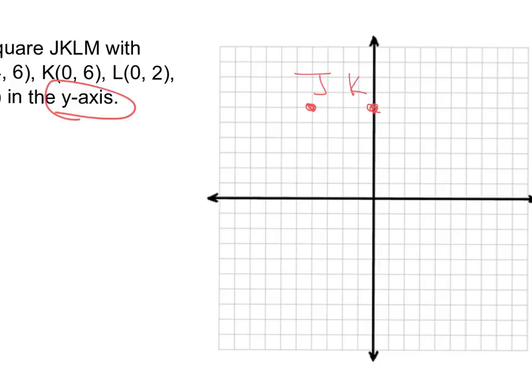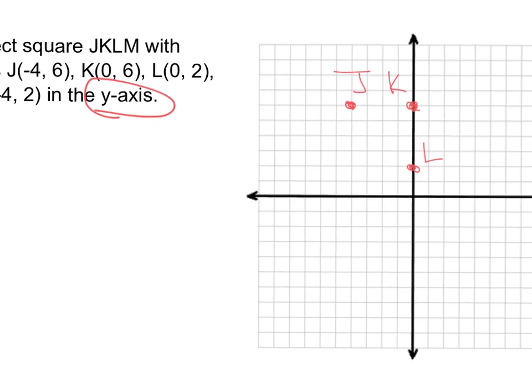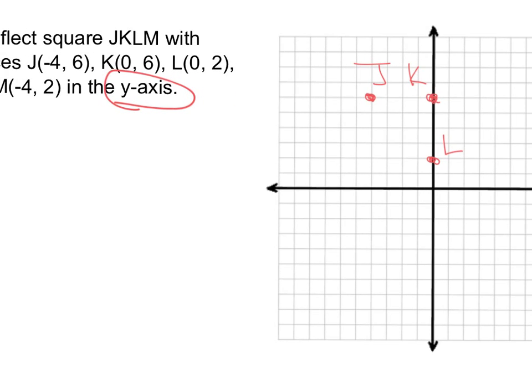L is going to be 0, 2. And I'm really hoping that the other one's going to be negative 4, 2. Yes, it is, and there's M. There's my square.